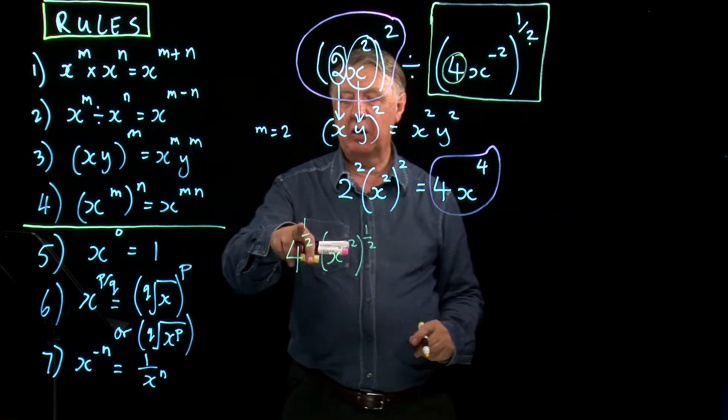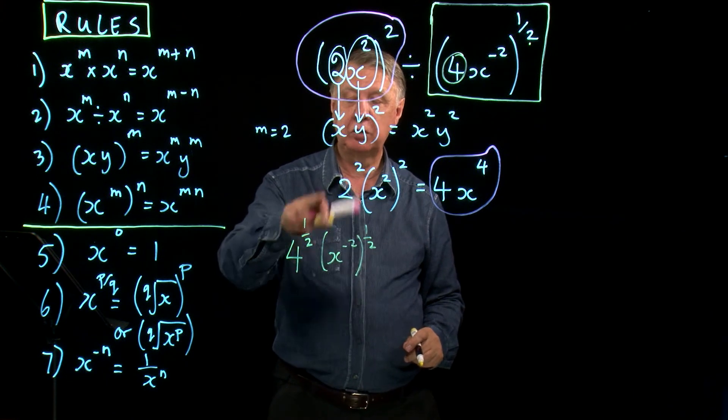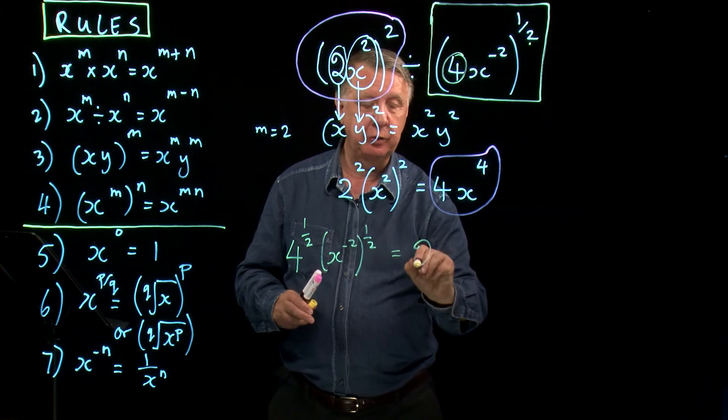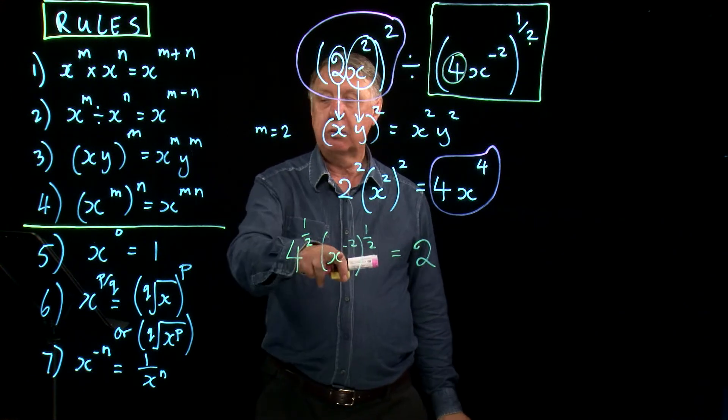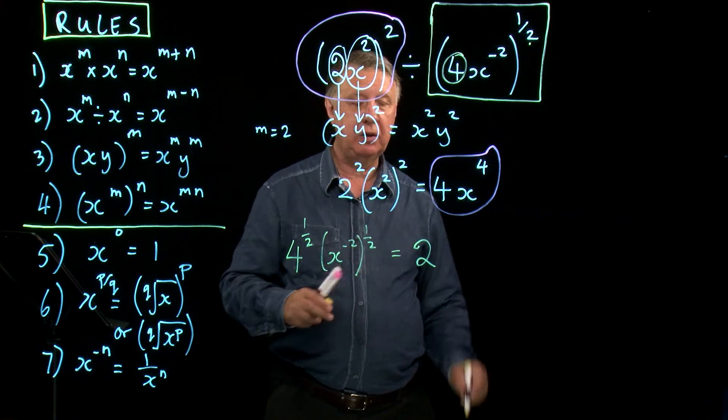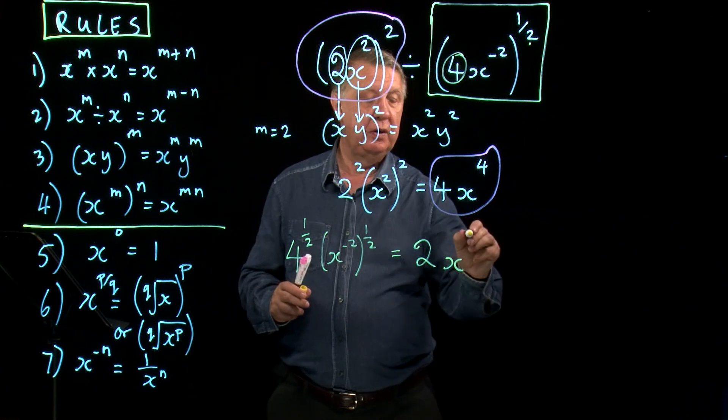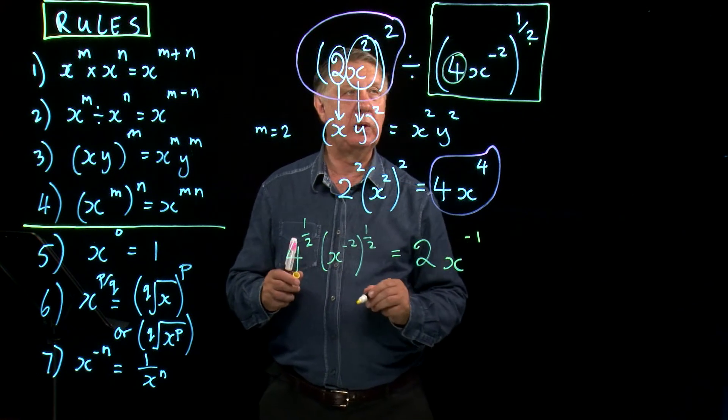Remember what power of half means? It means the square root. 4 square rooted is 2. Rule 4 tells me a power to a power, I multiply them together. Negative 2 times a half is negative 1.